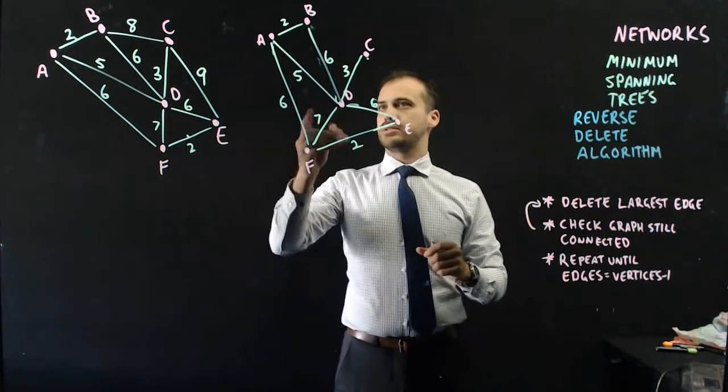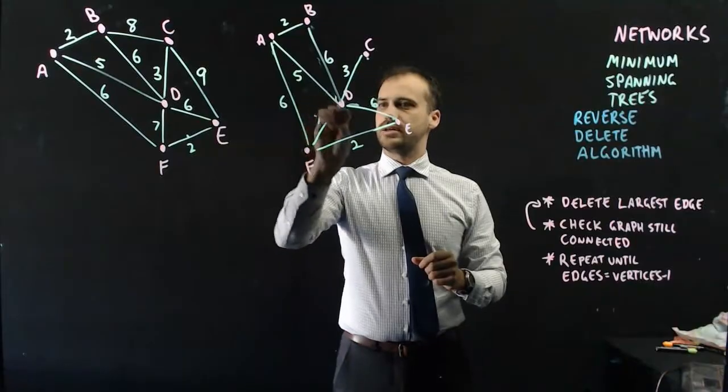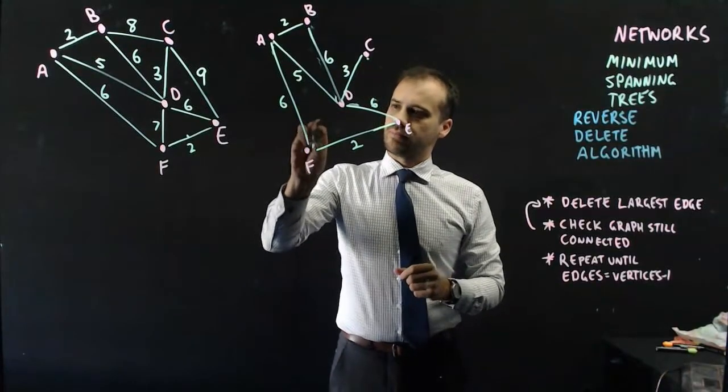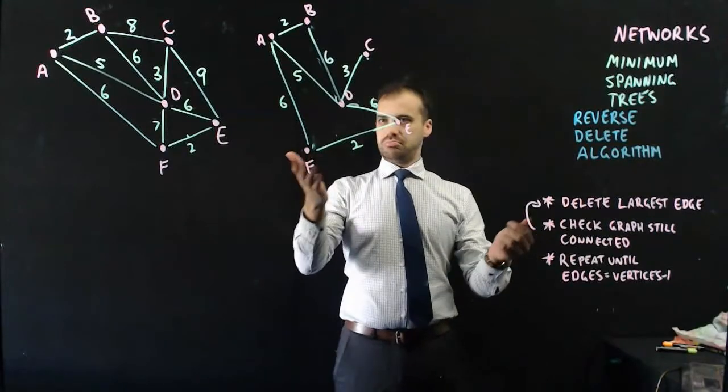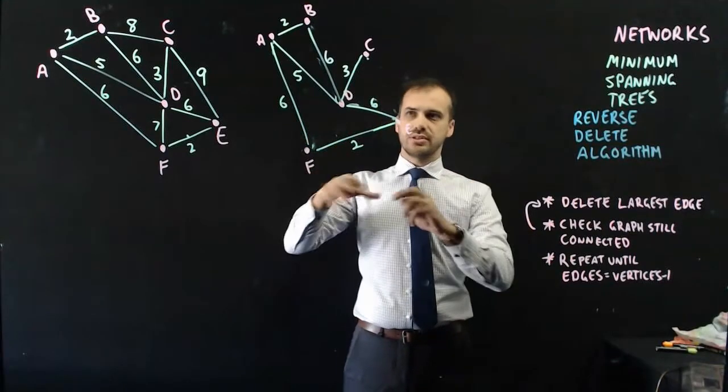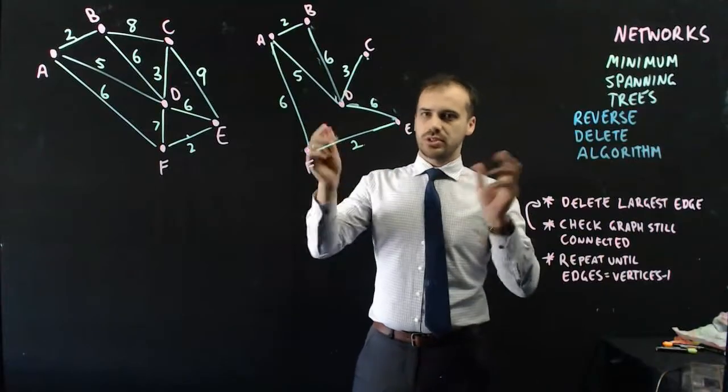Okay, what can I delete? Seven is a large one, so let's delete that. Okay. Are all the vertices still connected? Yes, there's no orphans. There's no one all by themselves, so we can keep going.